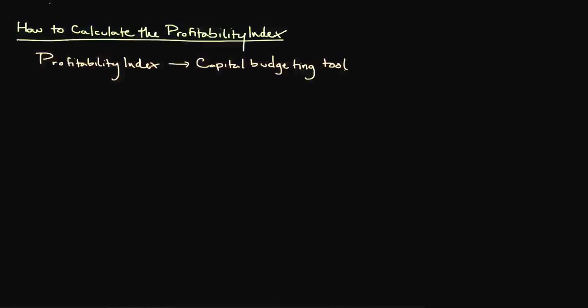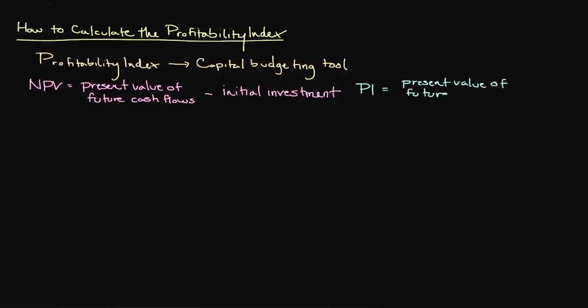While NPV expresses the return of a project in dollars generated by subtracting the amount of the initial investment from the present value of cash flows, the Profitability Index expresses this relationship as a ratio. We calculate the Profitability Index by determining the present value of future cash flows and dividing that value by our initial investment for the project. As with NPV, we need to project our future cash flows and then discount them to their respective present values.